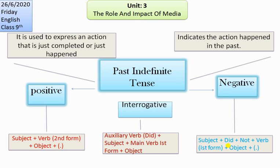For interrogative sentences, we use: auxiliary verb 'did' plus subject plus main verb in first form plus object. Keep in mind that with the auxiliary verb 'did,' we use the main verb in its first form. For example, 'Did you go to work today?' — here 'did' is the auxiliary verb, 'you' is the subject, and 'go' is the first form of the main verb.